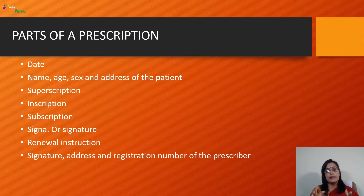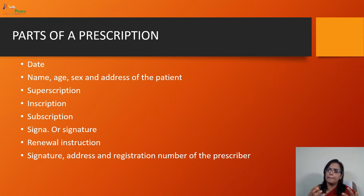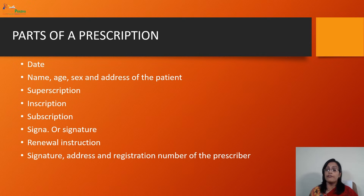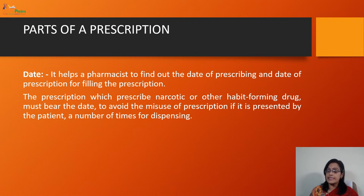Moving to the parts of prescription. As it is a written order from the registered medical practitioner, it has some parts and must be written in proper order. The parts are: date; name, age, sex and address of the patient; superscription; inscription; subscription; signal; signature and renewal instructions; and signature, address and registration number of the prescriber.